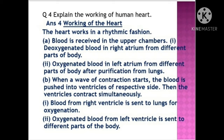Question 4: Explain the working of the human heart. Answer: The heart works in a rhythmic fashion. Blood is received in the upper chambers — deoxygenated blood in the right atrium from different parts of the body, and oxygenated blood in the left atrium from the lungs. When a wave of contractions starts, blood is pushed into the ventricles of the respective side — from the right atrium to the right ventricle, and from the left atrium to the left ventricle.